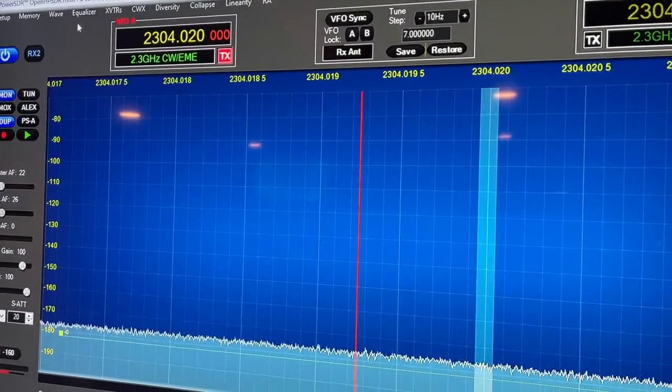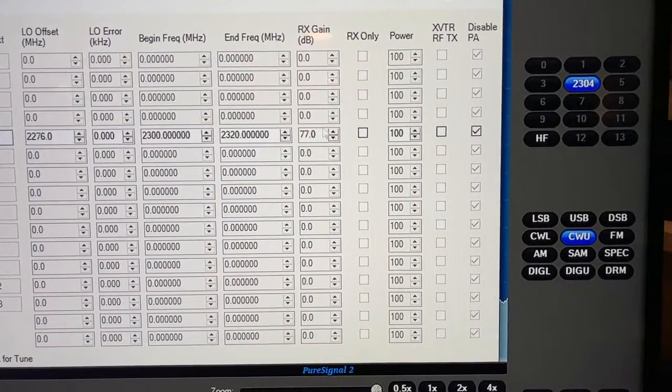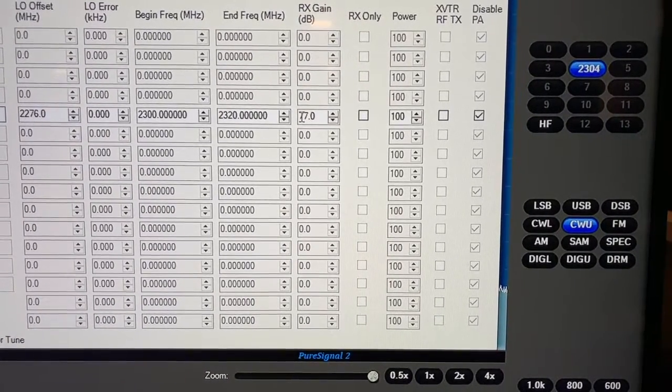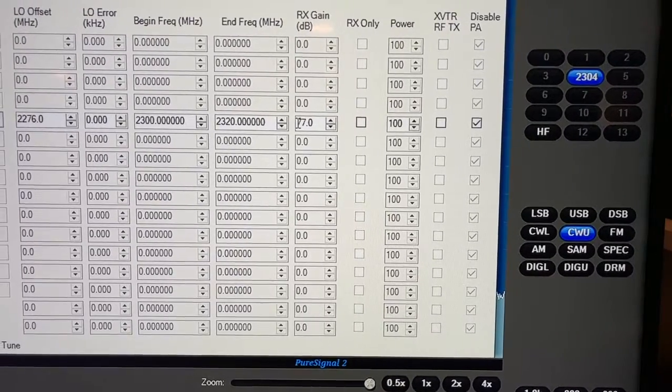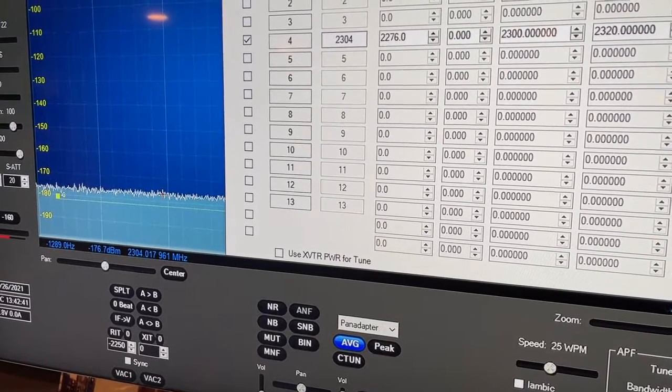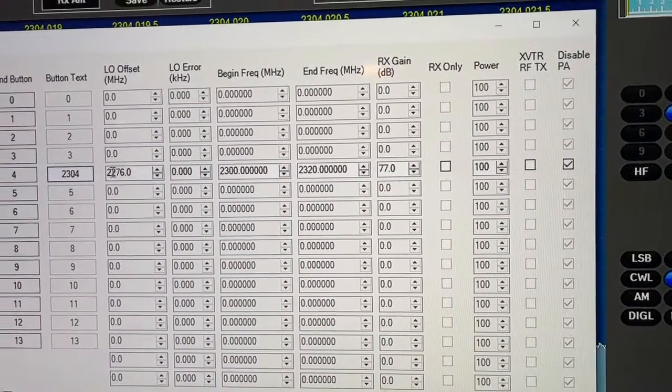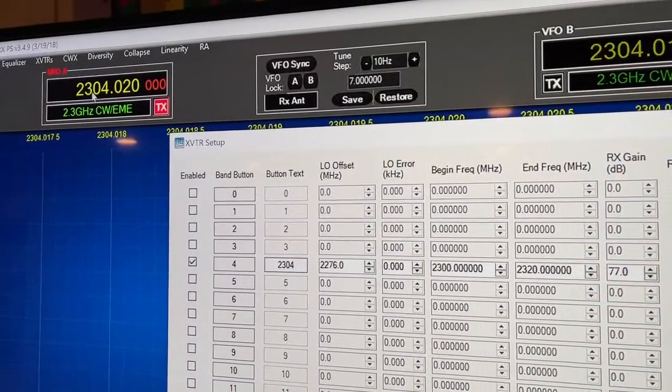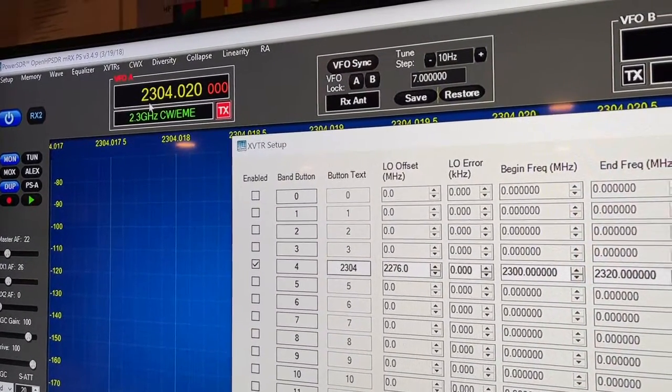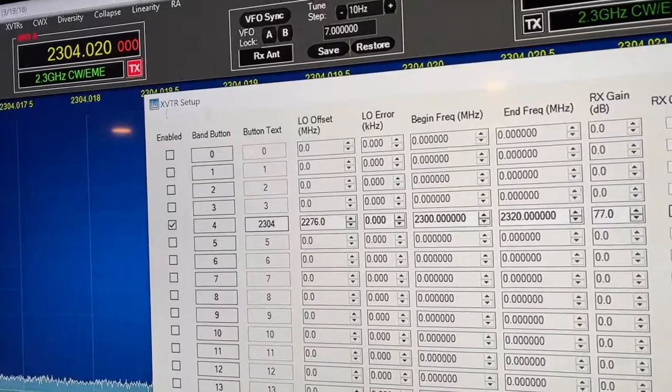A nice feature of PowerSDR is the ability to configure your transverter. Here you can compensate for the conversion gain of the transverters and the LNA and the coax losses so that the noise floor is the real noise floor as measured at the feed. And the LO frequency can be programmed so that the display, even though it's 28 MHz, 28.02 right now, it actually shows 2304.02, which is great because you can see it directly without having to go through conversions.